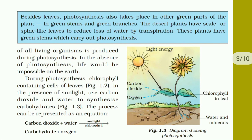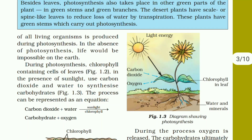Besides leaves, photosynthesis also takes place in other green parts of the plant — in green stems and green branches. Desert plants have scale-like or spine-like leaves to reduce loss of water by transpiration. These plants have green stems which carry out photosynthesis. Basically, photosynthesis occurs in all green areas of the plant.